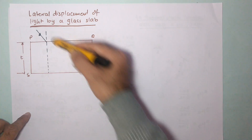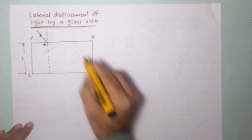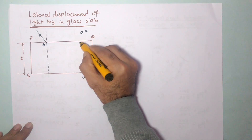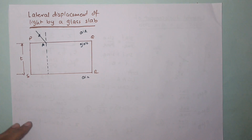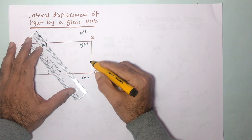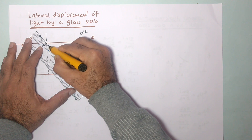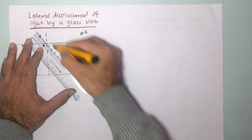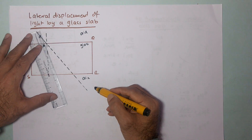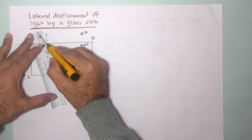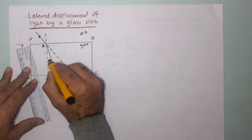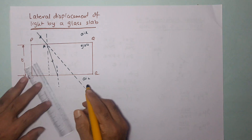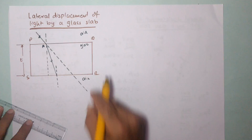The incident ray hits at point A. The ray passes from the rarer medium to the denser medium — from air into glass — so this ray will bend towards the normal. This is the direction the ray would have gone if the glass slab was not in the way, which we call the projected incident ray. The refracted ray bends towards the normal and travels through the glass.